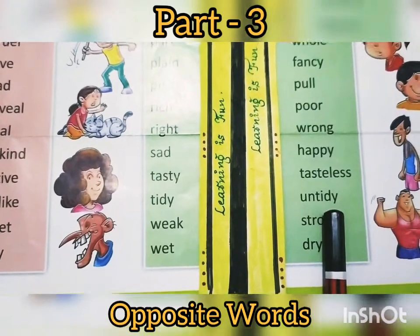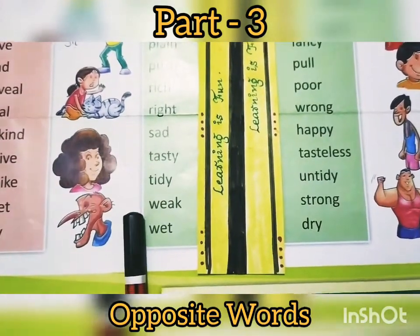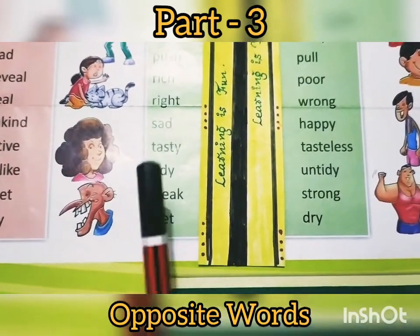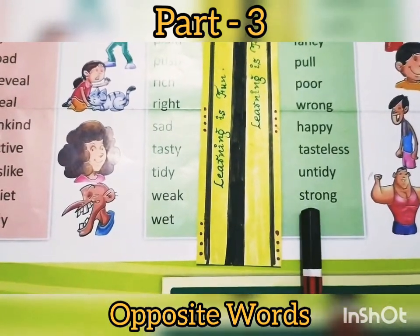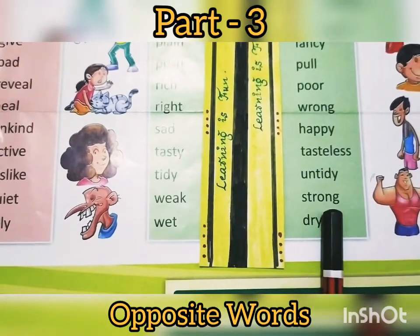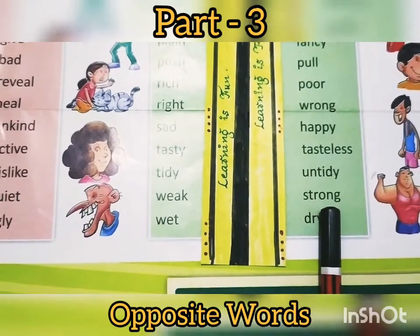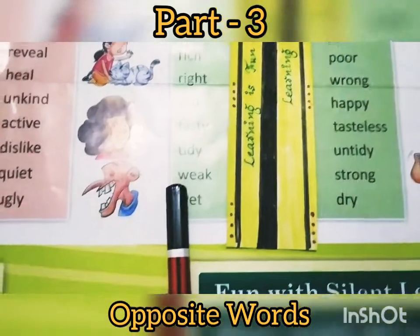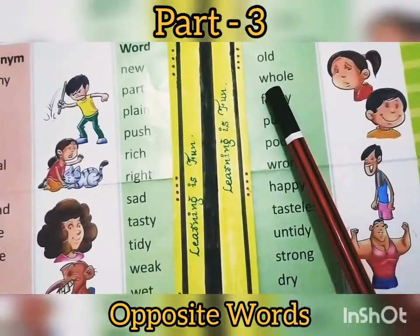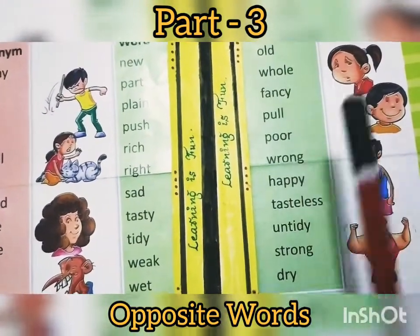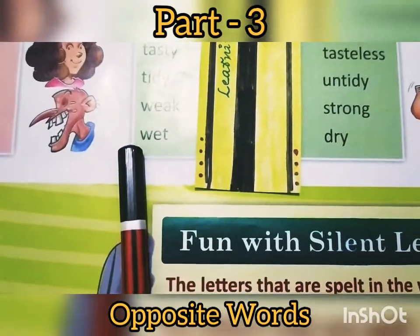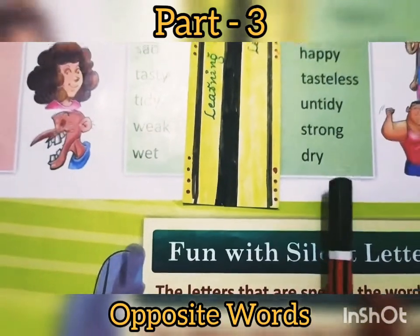Next one is Weak — means Kamzor — one who doesn't have strength. The spelling of Weak is W-E-A-K. Note that Whole is spelled W-H-O-L-E — people often confuse these spellings. The last one is Wet — means Gila — and its opposite is Dry, means Sukha.